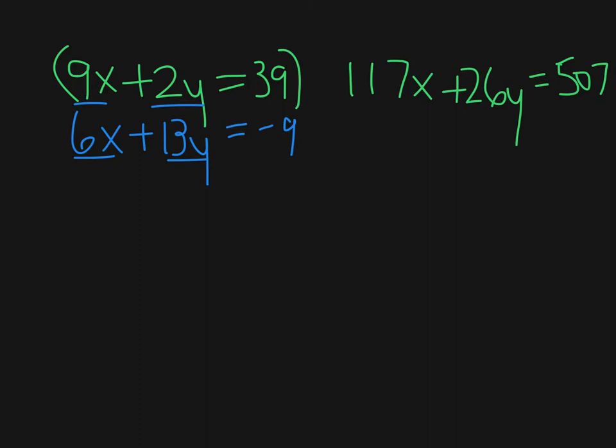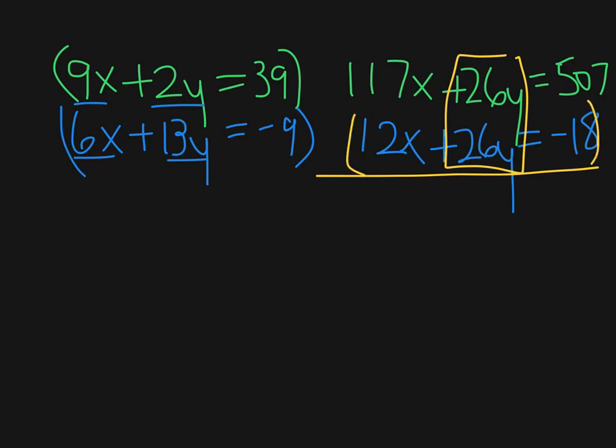The bottom, what I'm going to do is, I'm going to multiply the bottom by 2. And then what I'm going to end up with is 12x plus 26y equals negative 18. And then I've got my matching term here that I can then subtract out. I'm going to use subtraction because that will allow me to cancel it out. I'll be left with 105x equals 525. And then I'm going to divide both sides by 105. And x will be then equal to 5.